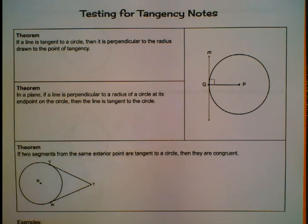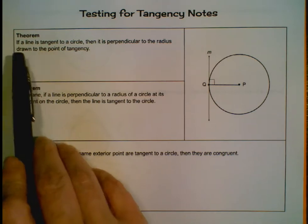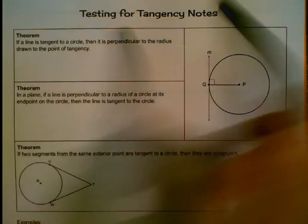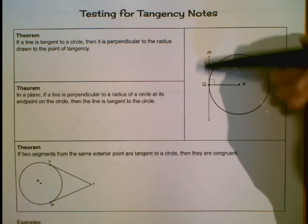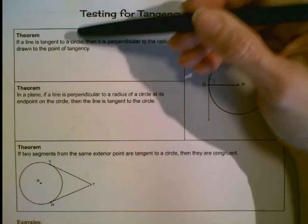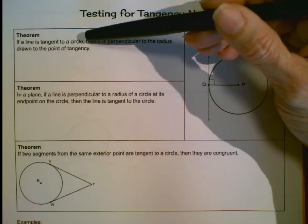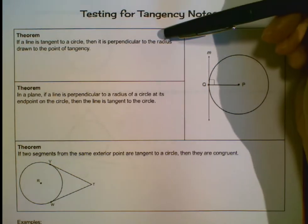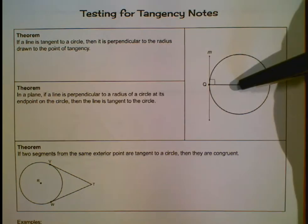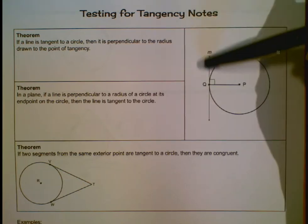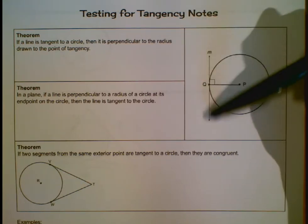We start off today with three theorems related to tangents. The first: if a line is tangent to a circle — and remember a tangent is a line that intersects the circle in one point — then it is perpendicular to the radius drawn to the point of tangency. So here we have our radius that is perpendicular to this tangent line.